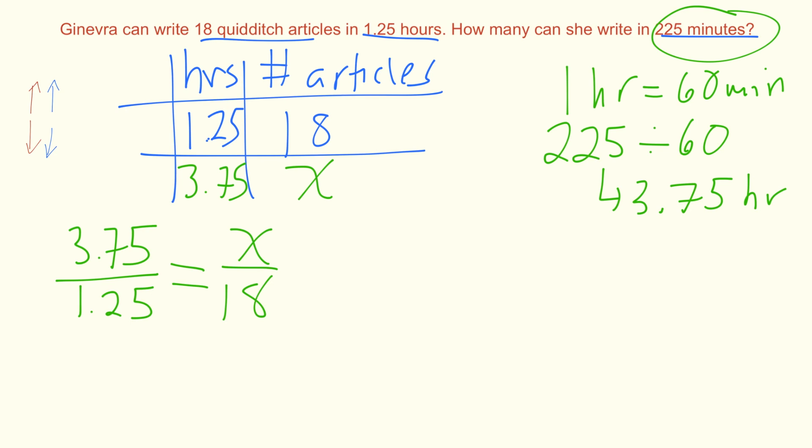To solve this problem we isolate for X. To do that we multiply both sides by 18 like this. What this does is it cancels out our 18s on this side and gives us 18 times 3.75 on 1.25 equals X.